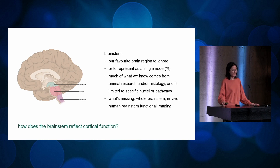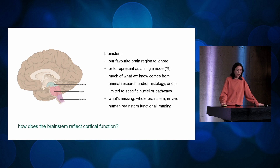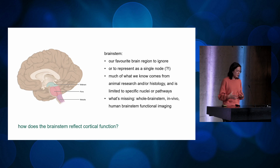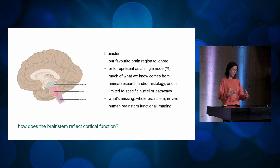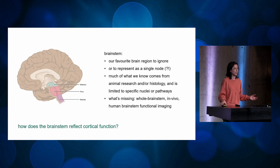I'm still a bit of a cortical-centric person, so I'm reframing this brainstem work around the cortex. The really big question is: taking all I think I know about cortical function, how does that change when I extend my perspective to also include the brainstem, which is usually excluded?